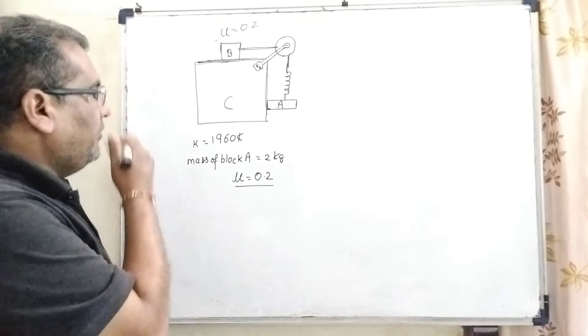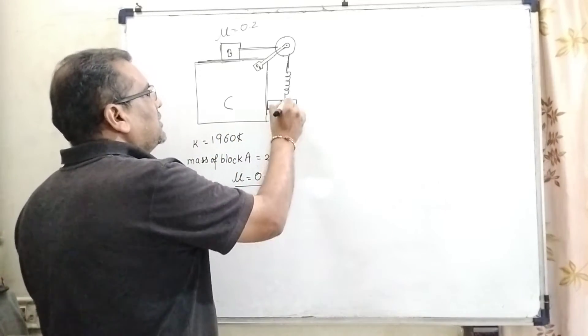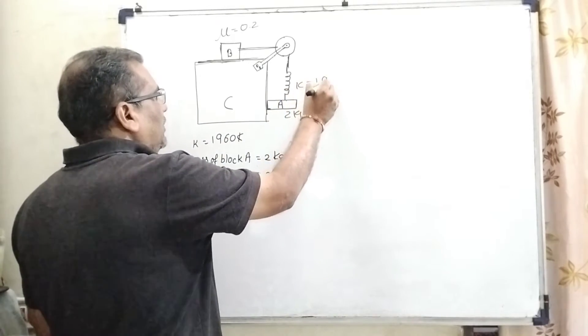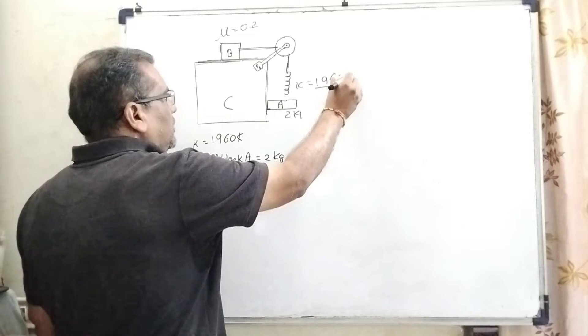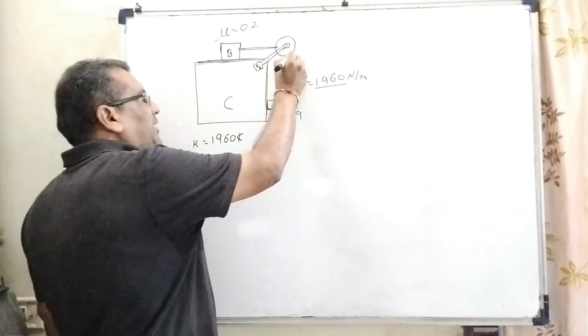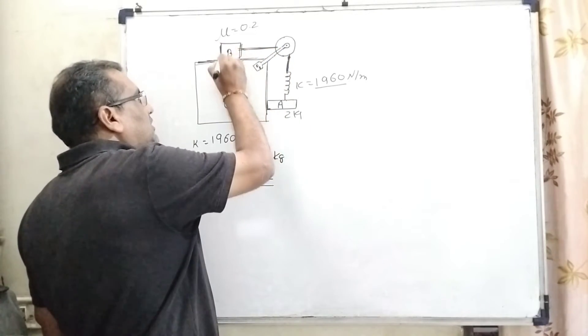According to the question, we have given two blocks A, which has mass 2 kg, which is connected with the spring. And the spring constant K is given, that is 1960 Newton per meter. And this spring is connected with string, and this string is connected with block B.